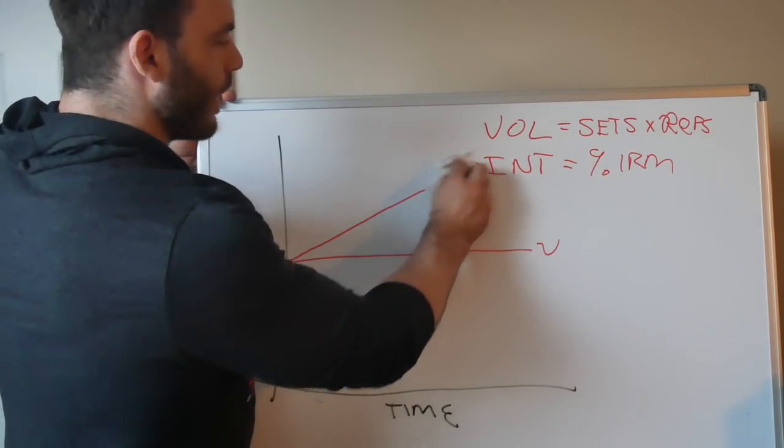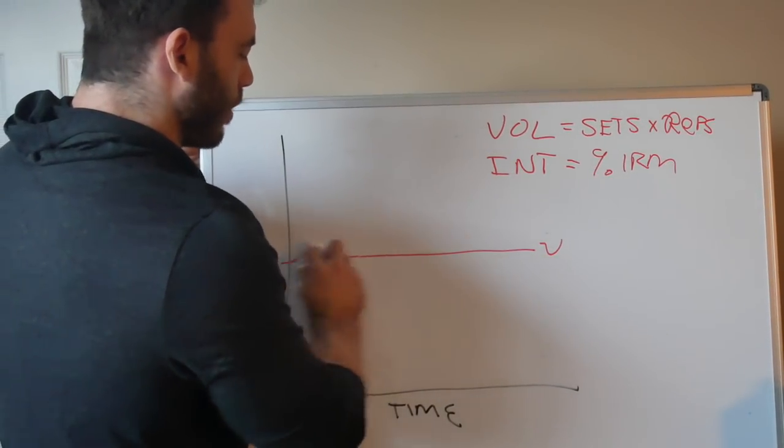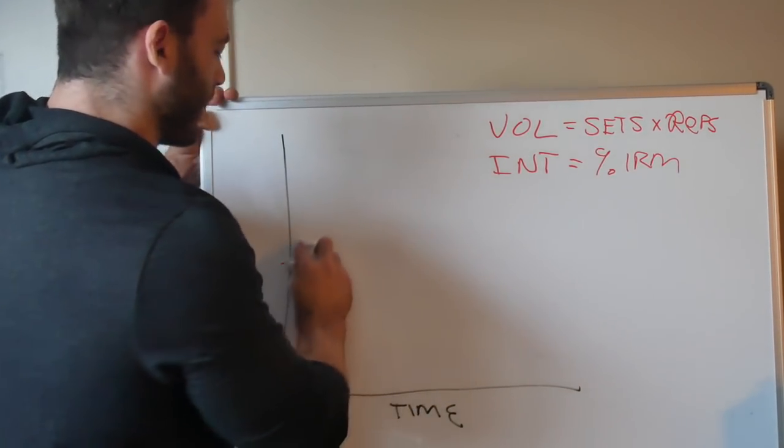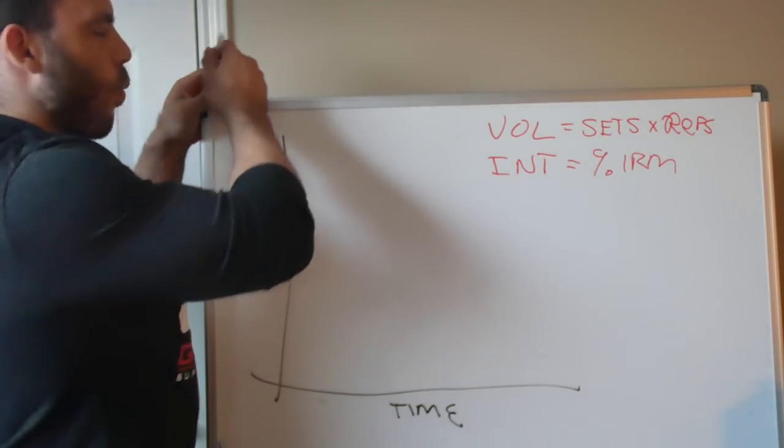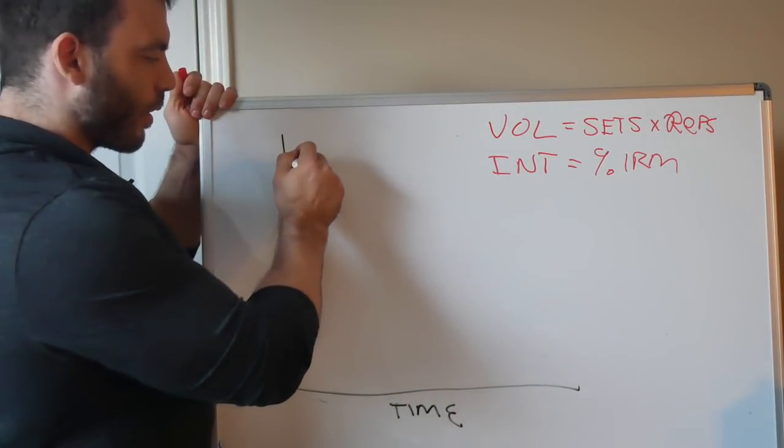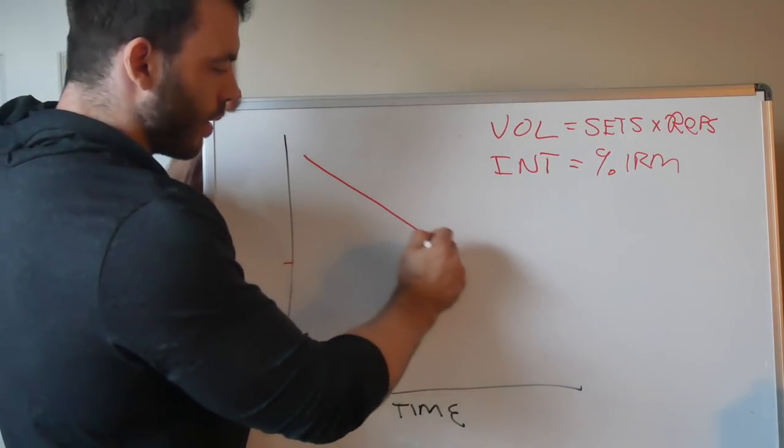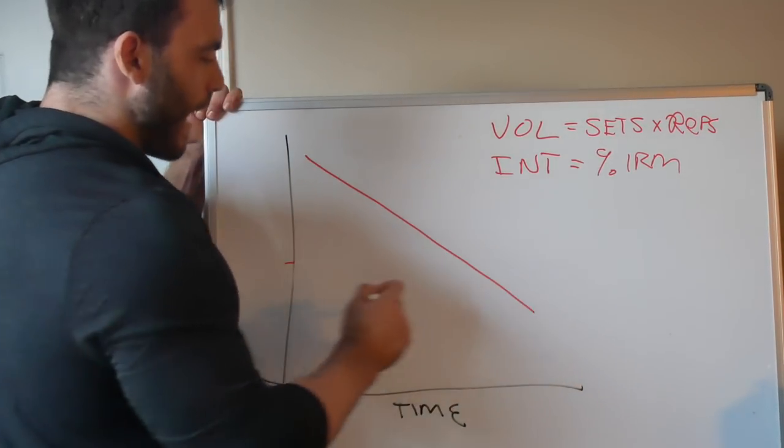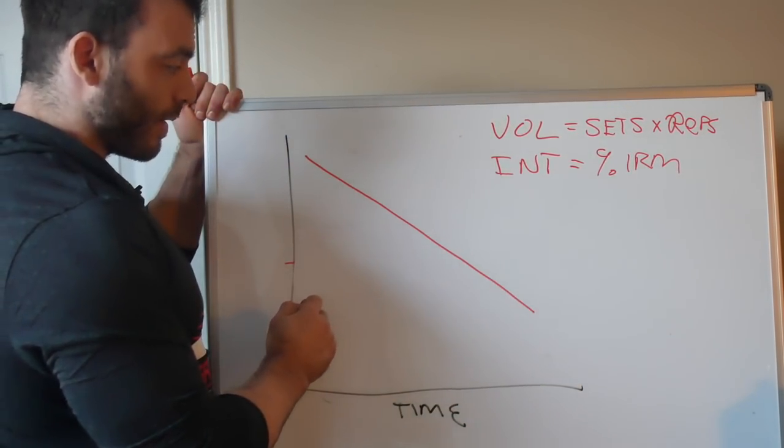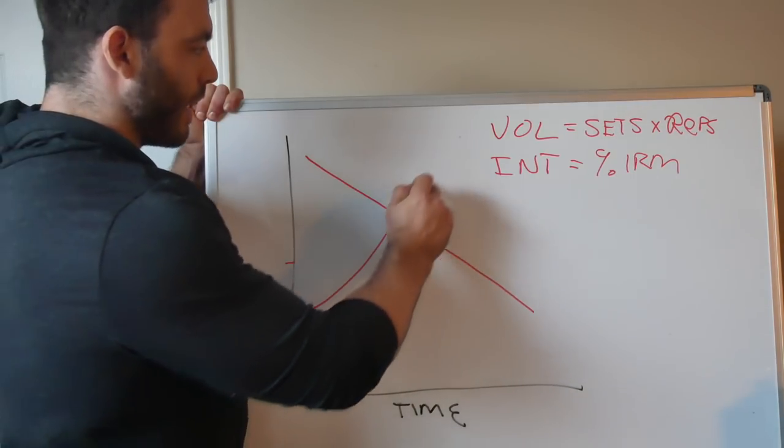But what if we did things a little bit differently? What if, instead of doing a constant volume and constantly increasing intensity, what if over time we started with a very high amount of volume and gradually decreased it? And we start with a relatively low intensity and increase it?